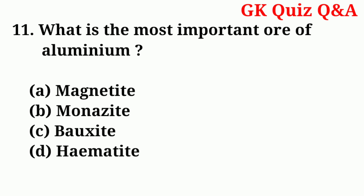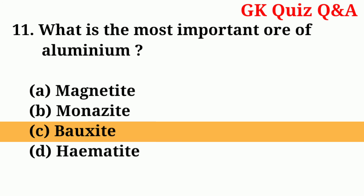Number eleven: what is the most important ore of aluminium? Answer: number C — bauxite.